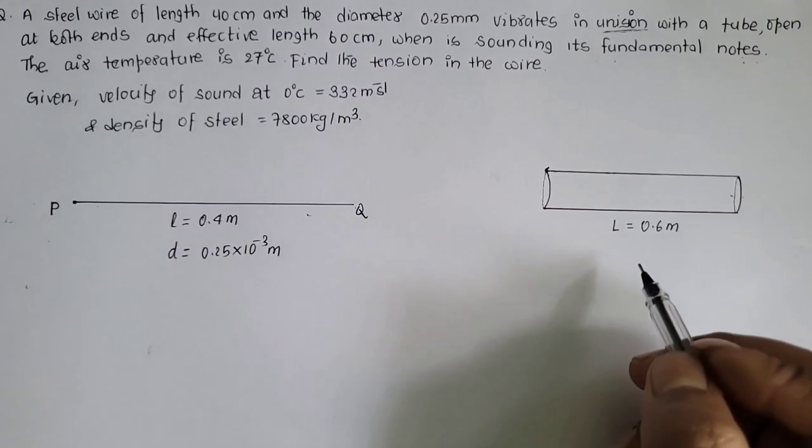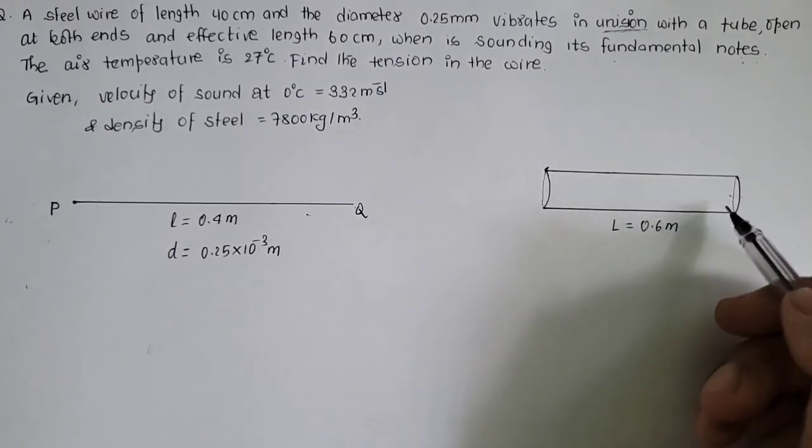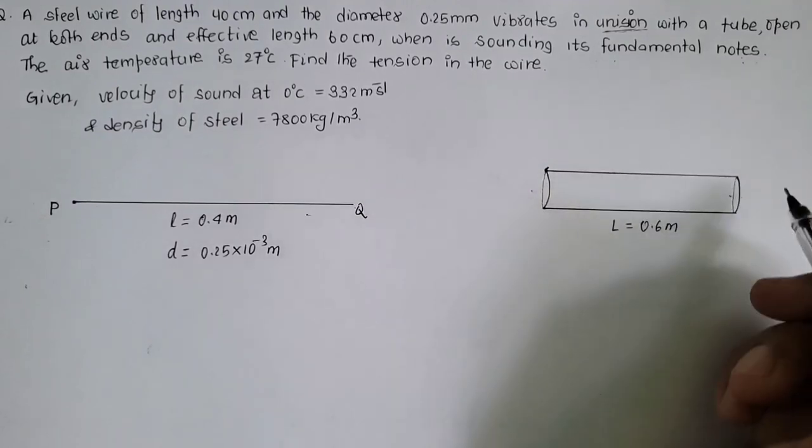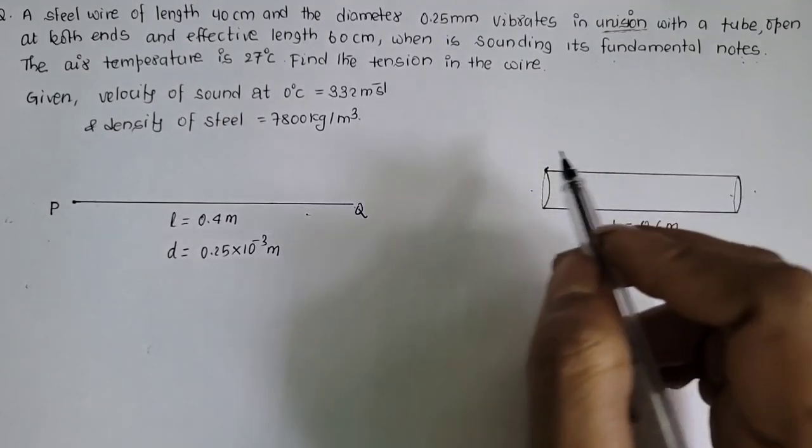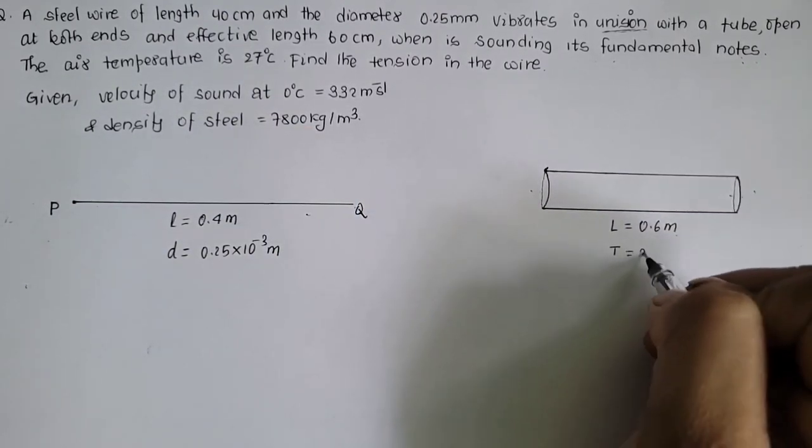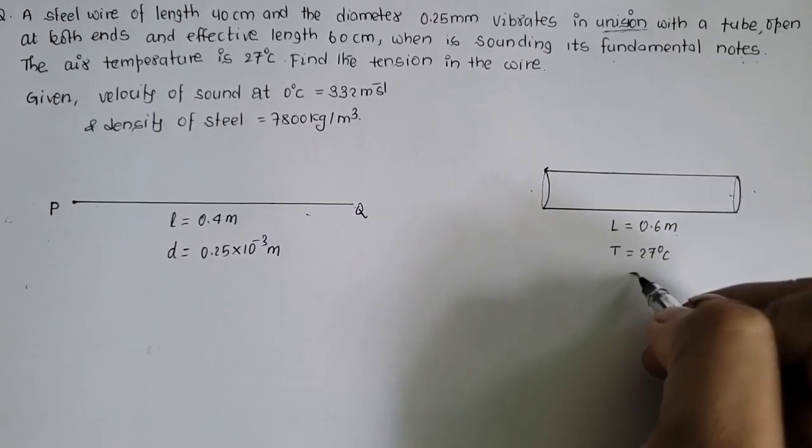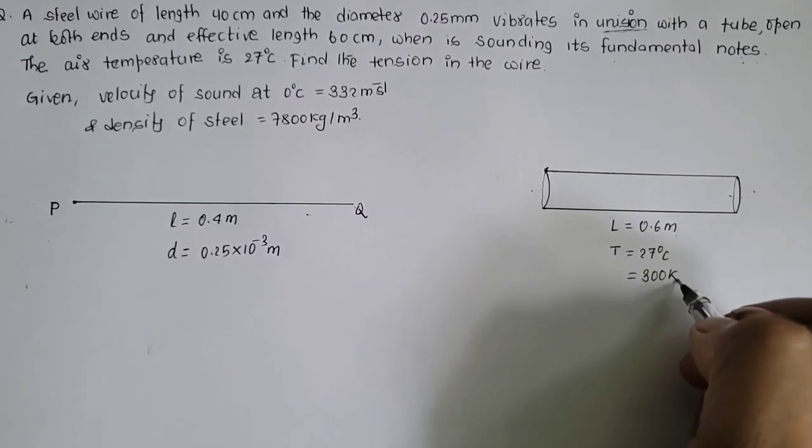This way first ma yyo given organ pipe jasko effective length vanegosa, yasko anti node dhekhi anti node sa ma ko position, yasko length 0.6 meter. Temperature so, 27 degree celsius ma. Yasko valet t 27 degree celsius lekhye n jasko value huncha, 27 plus 273, 300 kelvin.